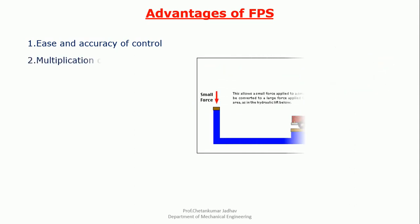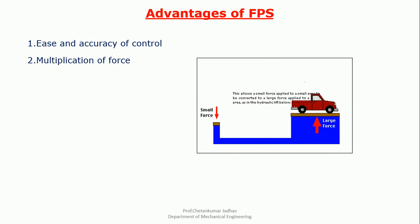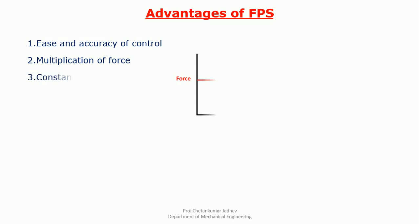Second one is multiplication of force. It means by using the principle of Pascal's law, we can apply small force at the inlet and we can generate more amount of force at the outlet. Third one is constant force or torque. The force developed from FPS is always constant and it is independent of any speed variation. It means there is no fluctuation in the output mechanical force.